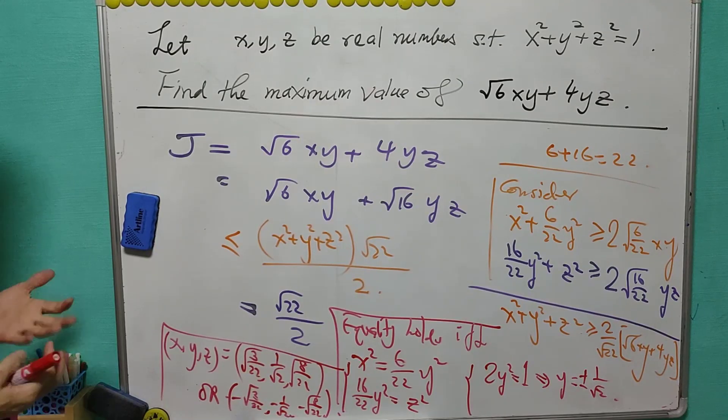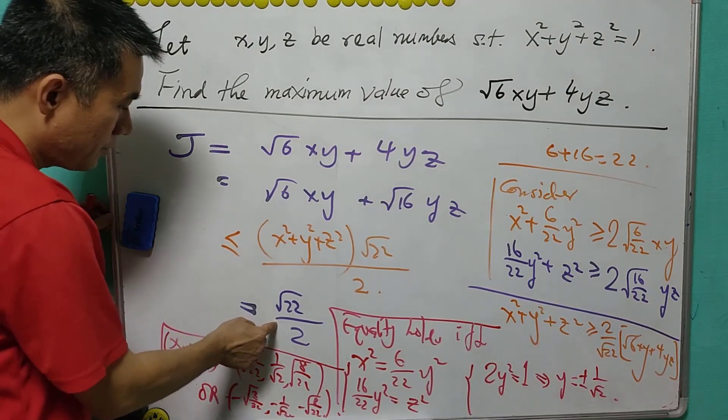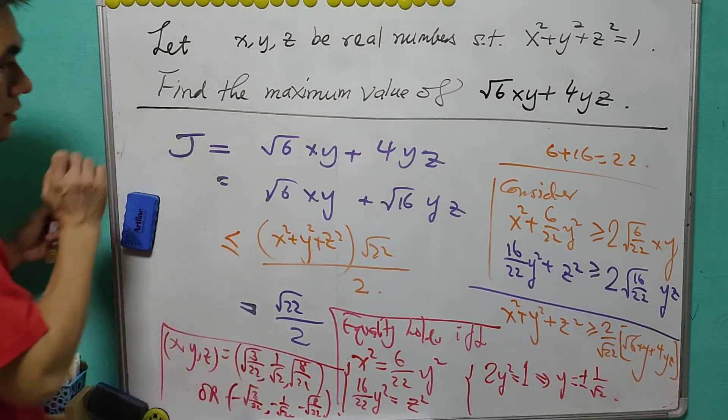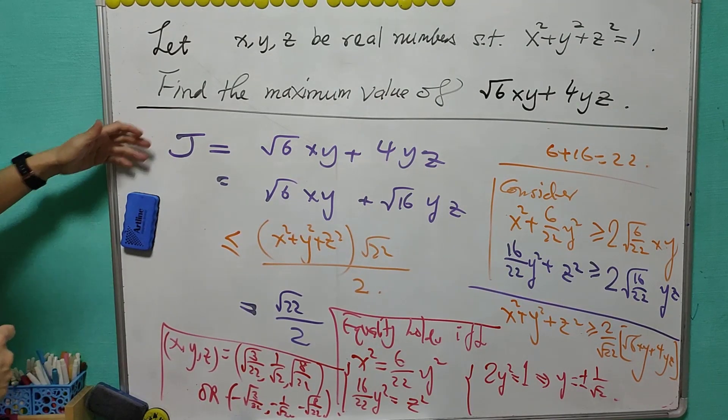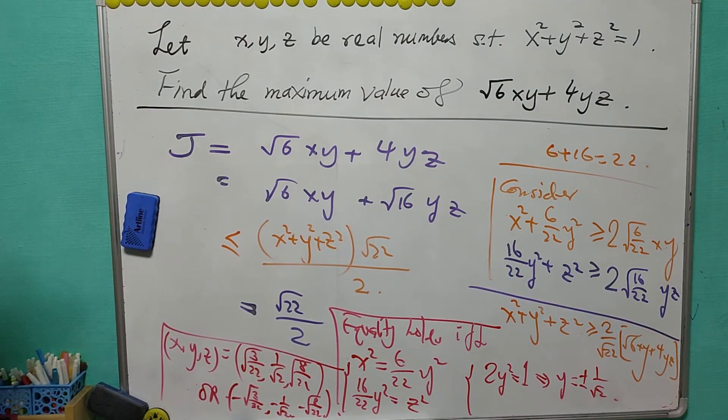So it means that the value of J = √22/2 is achievable. And therefore, the maximum value for J is equal to √22/2.